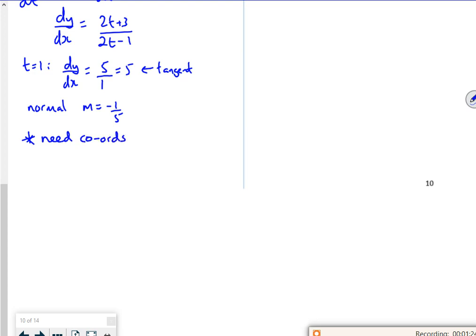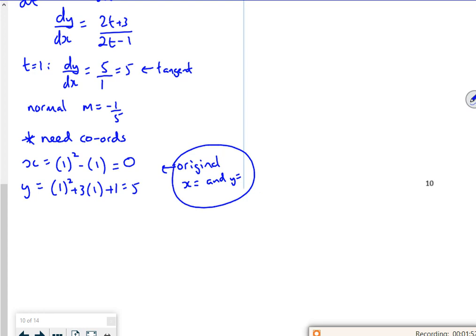So for t is 1, from the original equation, make sure it's the original equation, that's going to be 0, and 1 squared, 3 lots of 1 plus 1 is 5. So that has to be from the original, x equals, and y equals to work. So it gives me a coordinate of 0, 5.